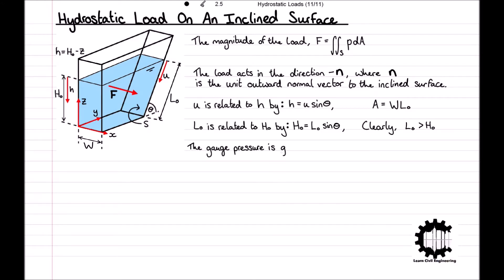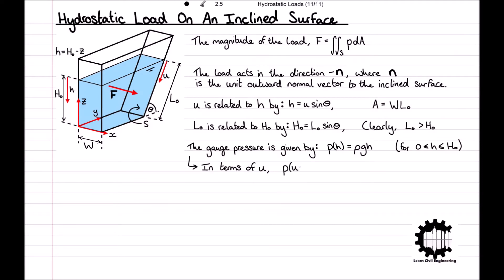The gauge pressure is given by p with respect to the coordinate direction h equals rho g h, for h equals 0 to h0. And so the equivalent gauge pressure in terms of the inclined coordinate u is p with respect to the coordinate direction u equals rho g u sine theta, for u equals 0 to u equals l0. Notice here we simply substituted our expression for h from above into our equation for the gauge pressure distribution.